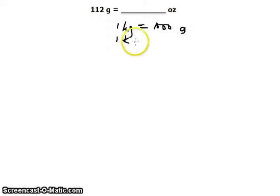1 kilogram is also equivalent to 2.2 pounds, and 1 pound is equivalent to 16 ounces.